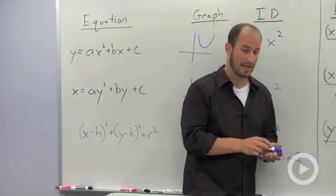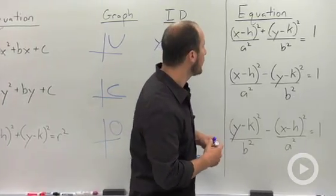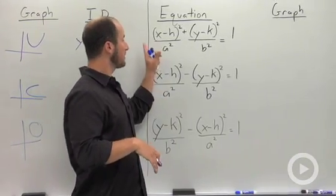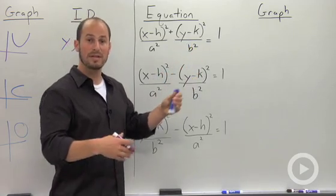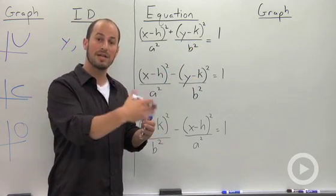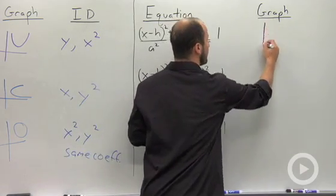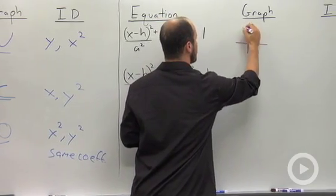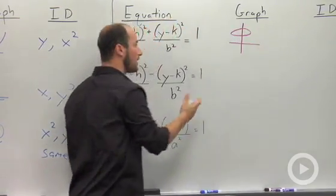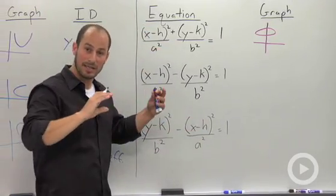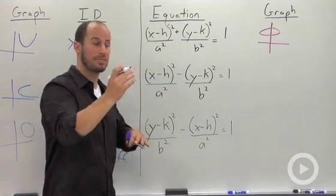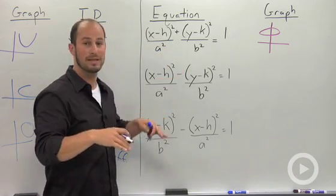Some other conics that we have talked about—the next one is an equation for an ellipse. Again, the center for this ellipse is moved, but what we know that graph looks like is going to basically be an oval. Given this particular example, we don't know if it's going to be longer or taller; that all depends on whether the a or b is bigger.